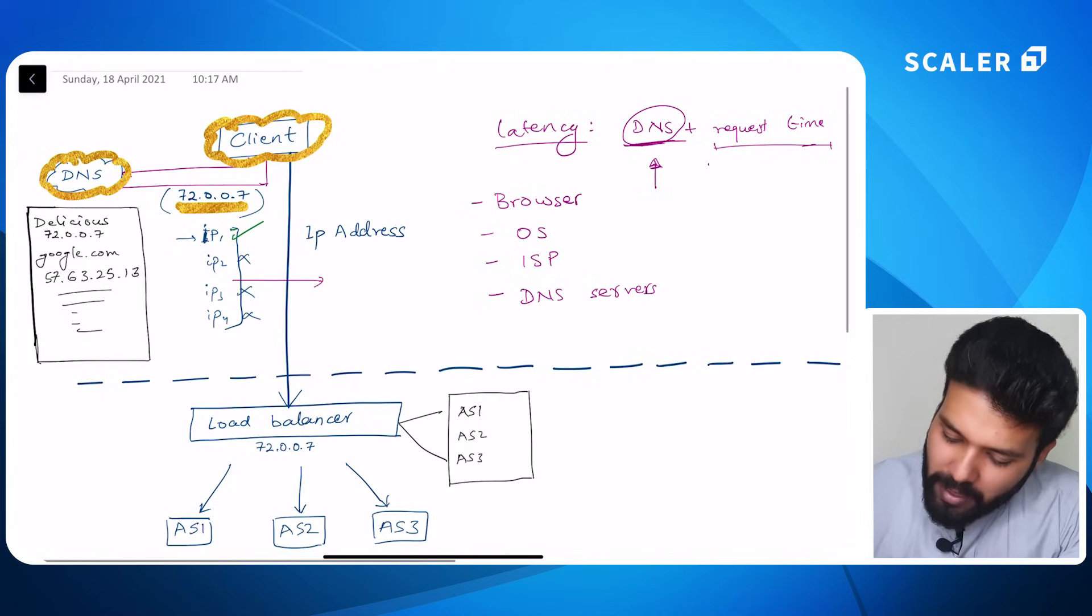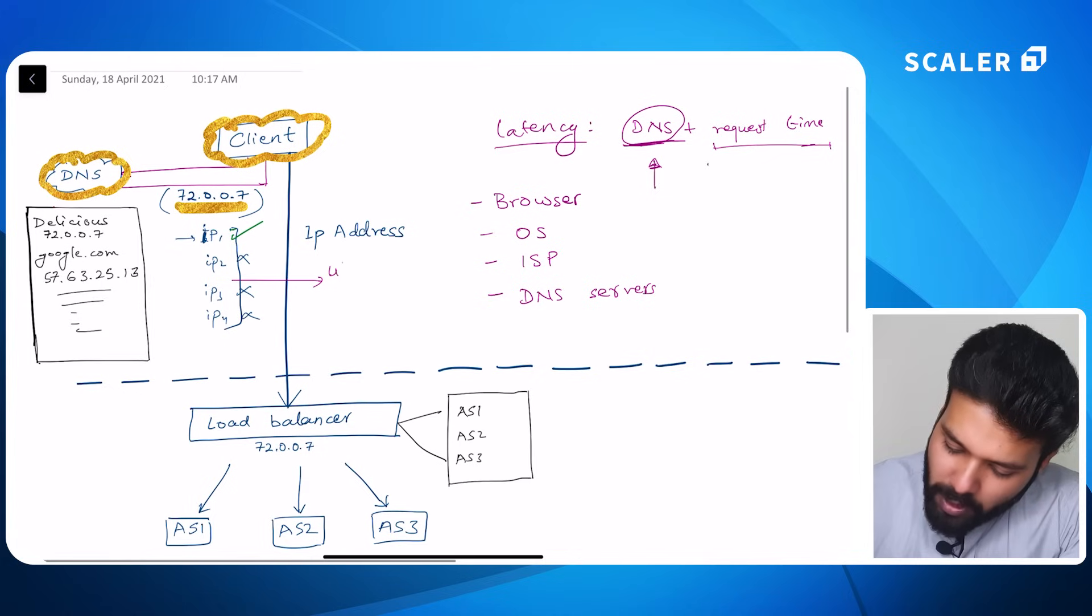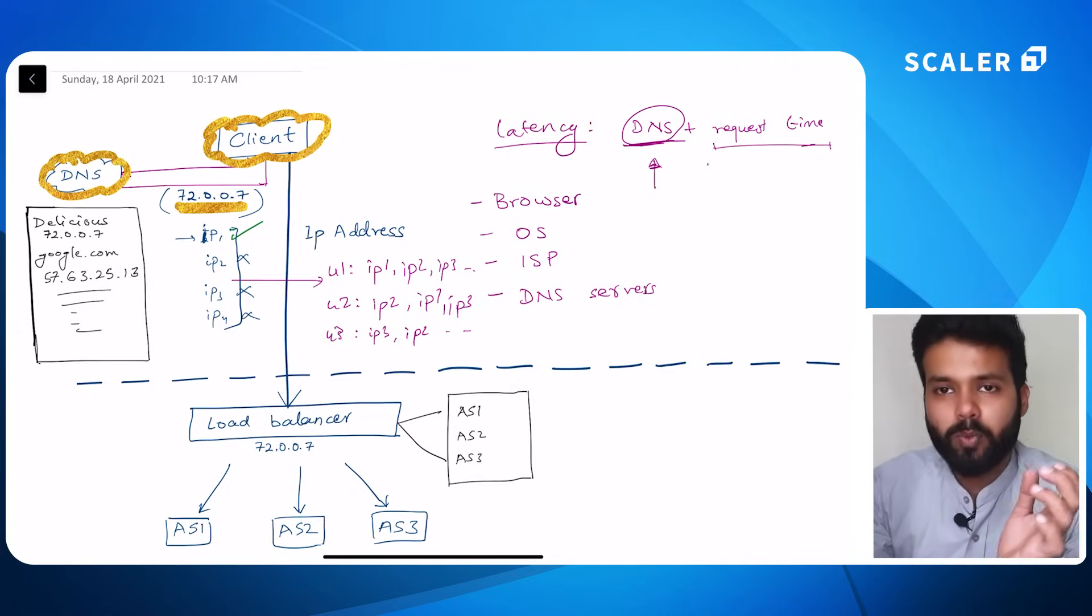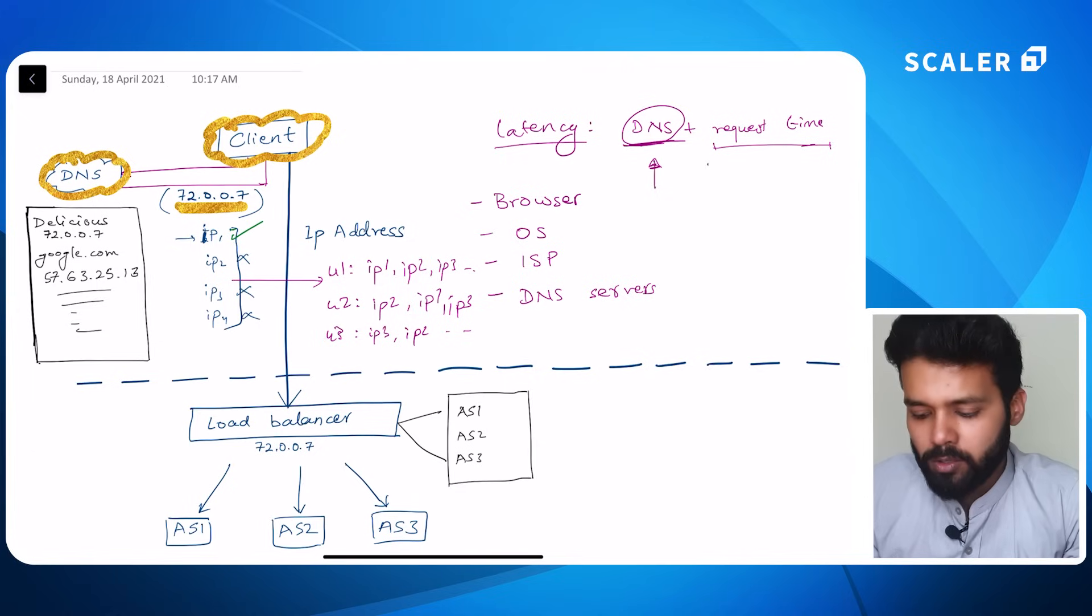What DNS does is, instead of returning the list like this, they return the list in a shuffled order, meaning that it is very much possible that user 1 gets a list like IP1, IP2, IP3 and so on. User 2 gets a slightly different order like IP2, IP1 and IP3. User 3 gets a list like IP3, IP2 and so on. This way, I have successfully distributed the load to my available instances.